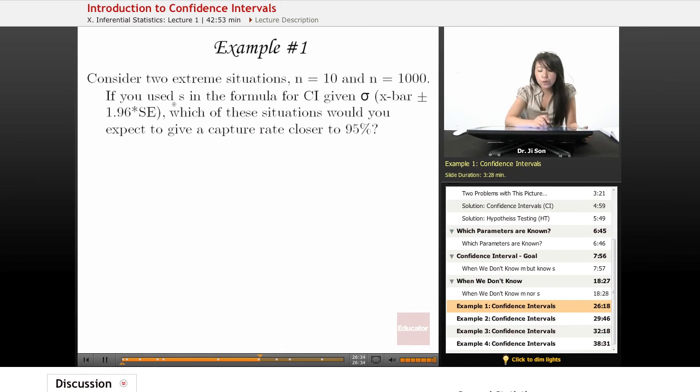If you use S in the formula for CI given sigma, so here's the actual formula for when you have sigma. So we use 1.96 because you use the z-score. Which of these situations would you expect to give a capture rate closer to 95%?